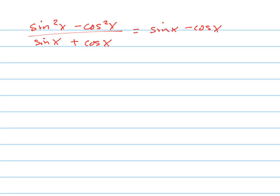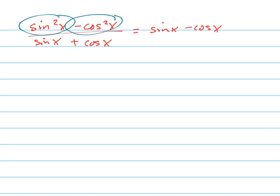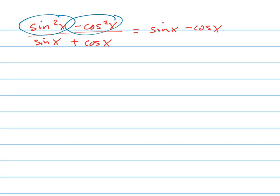This one looks a little bit trickier, and it is. Now what a lot of people do wrong on this one is they start trying to cancel out terms in the numerator and denominator — but you can't do that. The only time you can cancel something out is when it's a factor of the entire numerator and the entire denominator. If you ever wonder whether you can do that, just write a simpler equation like (2²−3²)/(2−3) and see if canceling works — it doesn't. So just do a simple numerical example to check if something is legal.